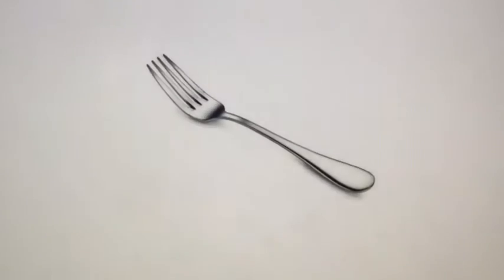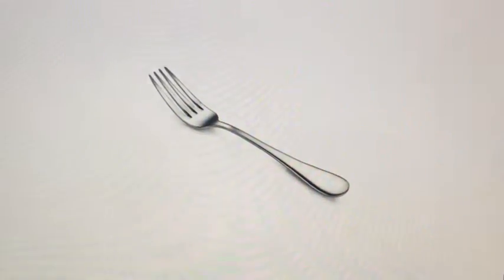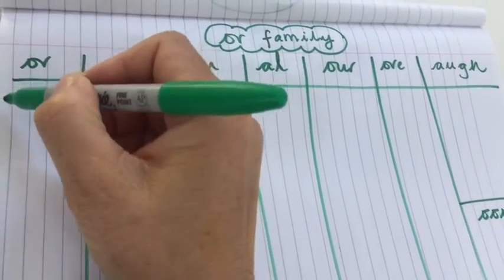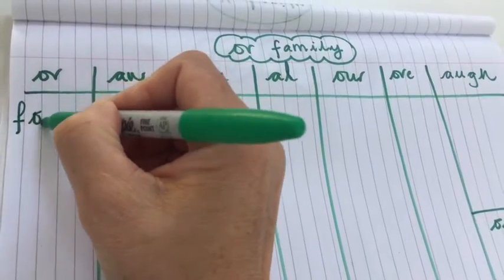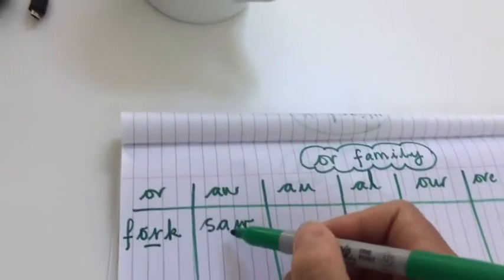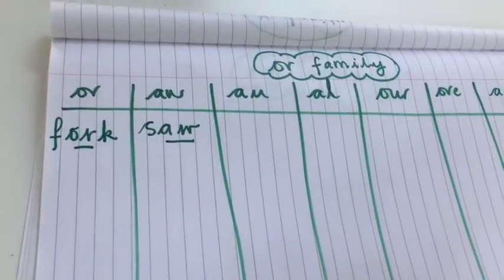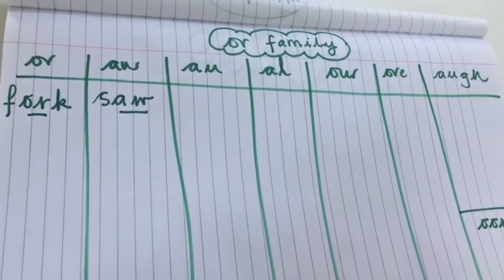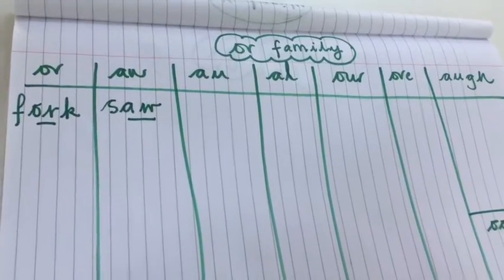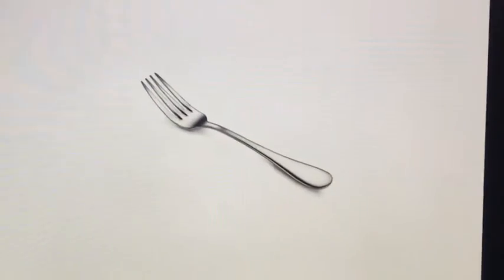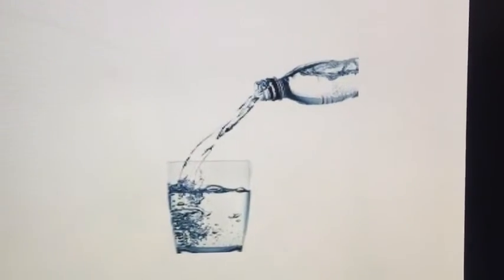Our next picture is a fork. You can hear the 'or' sound there after the 'f' sound, and that's going to go in this column — the 'or' letters are making the 'or' sound. Let's highlight the 'o' and the 'r'. Please feel free to pause the video at any time, do your writing, and then replay it. You can do this phonics lesson at your own pace.